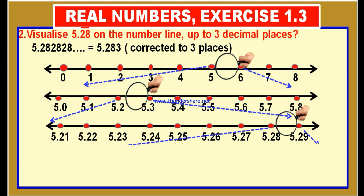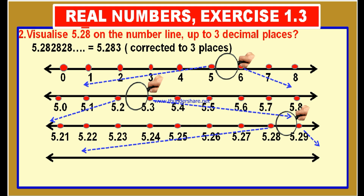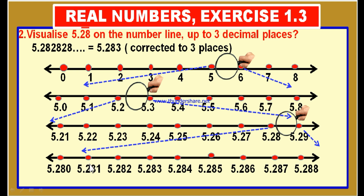5.283 lies between 5.28 and 5.29, and this part is to be magnified. As we magnified, this is the number line we got. On this number line, we took points at equal distances and named them: 5.28, 5.281, 5.282, 5.283, 5.284, 5.285, 5.286, 5.287, 5.288, 5.289. Our required number is 5.283, and this point represents the value 5.283. Therefore, we located 5.283, this decimal number, on this number line at this point.